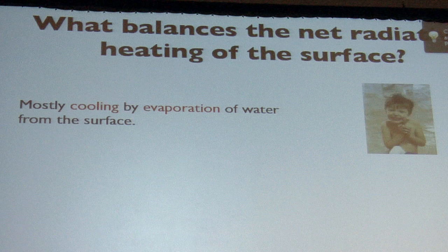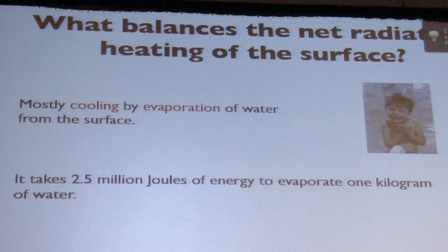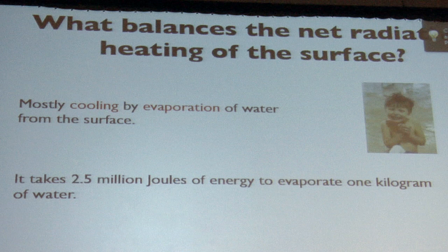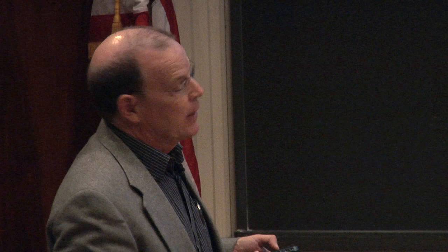How do we balance that? The surface has to balance that radiative energy input, and it does so mostly by evaporating water. It cools the surface in the same way that someone who just got out of a swimming pool feels chilly. This is actually a pretty efficient process because it takes a whole lot of energy to evaporate one kilogram of water. If one kilogram of water had two and a half million joules of kinetic energy — like you shot it out of a cannon — how fast would it be going? Mach 7. That's a lot of energy.